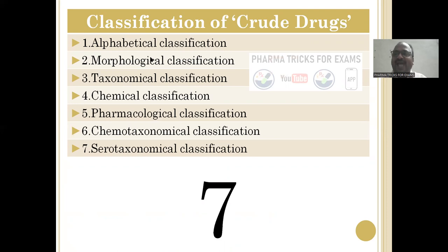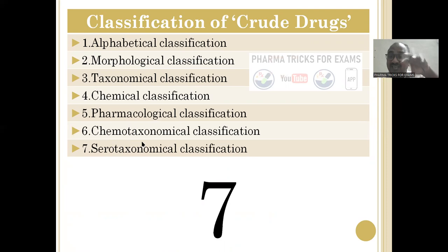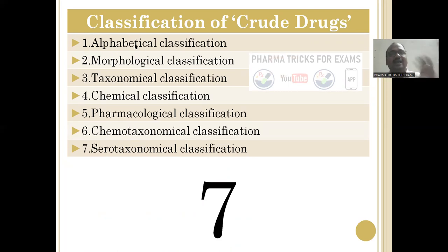Alphabetical classification — think of it as A for apple, B for banana, C for custard apple, D for dragon fruit. In the same fashion, here we classify crude drugs in alphabetical order. All drugs are listed alphabetically A, B, C, D.